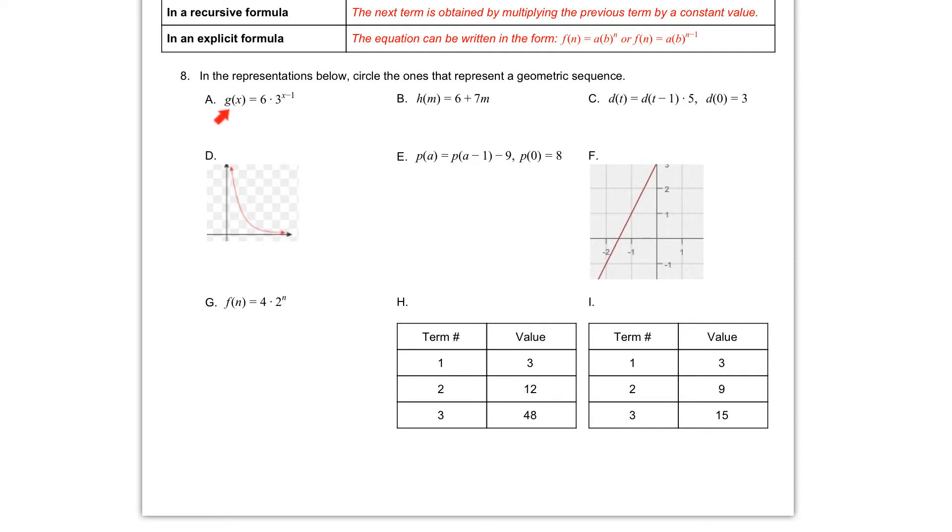If we start with letter A, letter A says g of x is equal to 6 times 3 raised to the x minus 1. So because the x is here in the exponent, that indicates to us that this multiplying by 3 is what's happening each time. And multiplying by each time does indicate a geometric sequence. So we can go ahead and circle letter A as geometric.